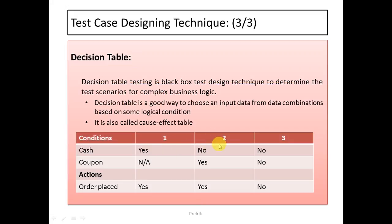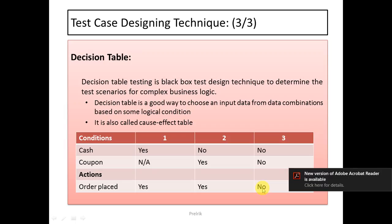If the customer has no cash but has a coupon, the condition evaluates to true and the order can still be placed. In the third condition, if the customer has neither cash nor a coupon, both conditions are false and the order cannot be placed. That covers the Decision Table technique, and together these three methods — Equivalence Class Partitioning, Boundary Value Analysis, and Decision Table — make up the test case designing techniques.